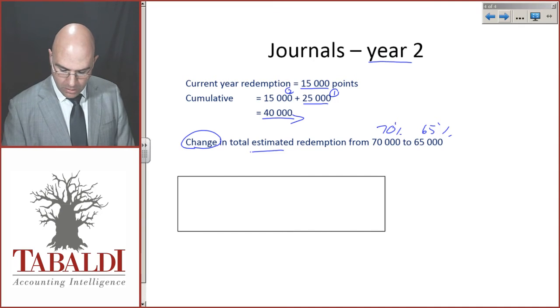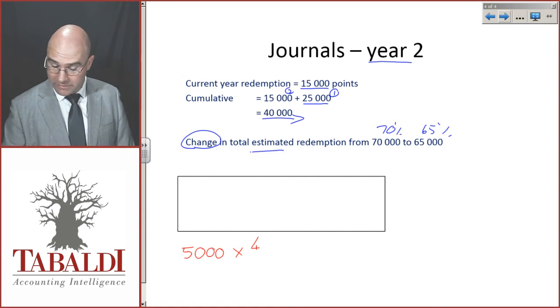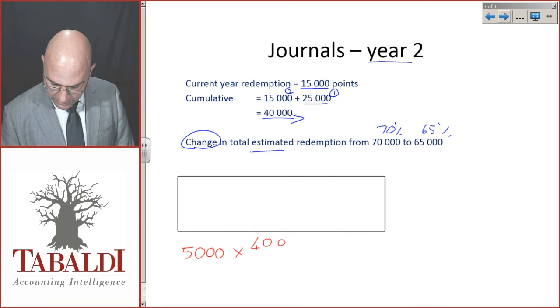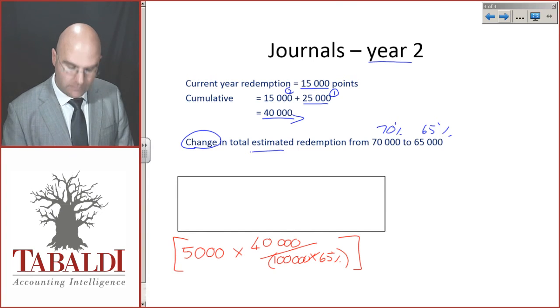So what is our calculation going to be? The amount that is going to be recognized will once again be the 5,000 total deferred revenue times by—now I'm doing this cumulatively—40,000 over 100,000 times 65%, being the 65,000. That is the cumulative amount.